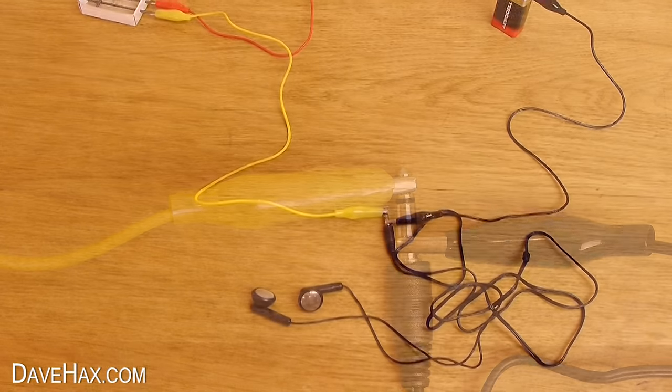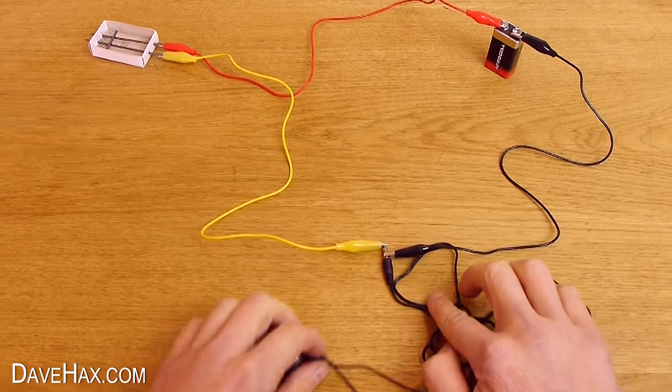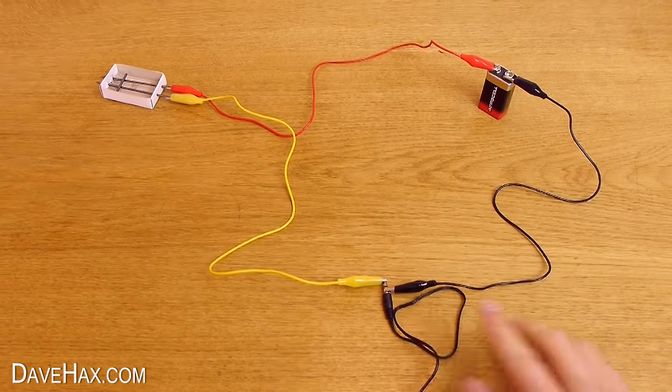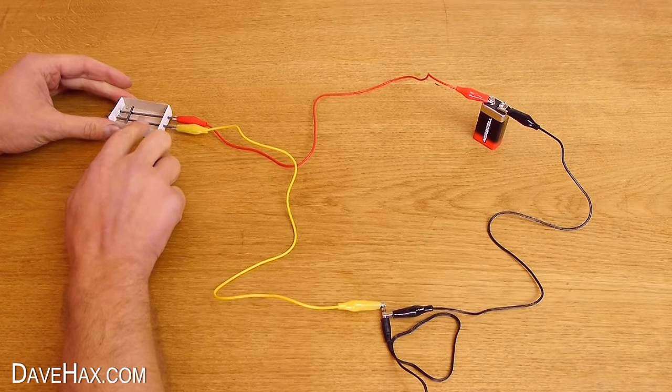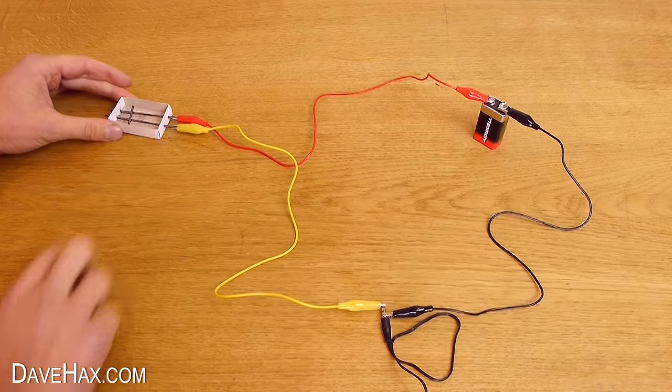As these are stereo headphones, we'll only get sound out of one side. But put them both in so you can find out which one. Next, try gently tapping the microphone. You should be able to hear it coming through one of the speakers. Pretty cool, huh?